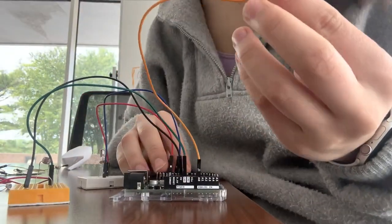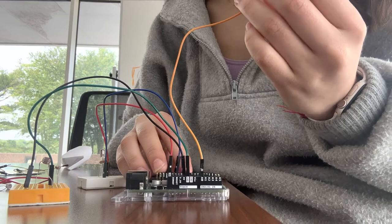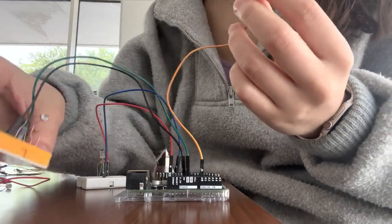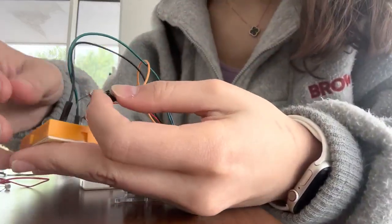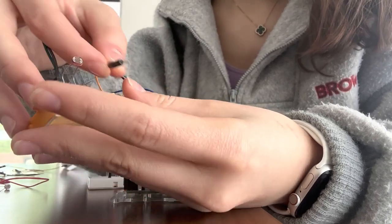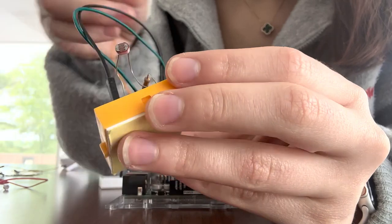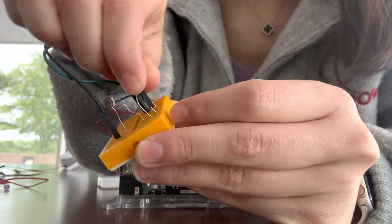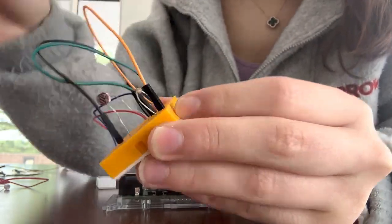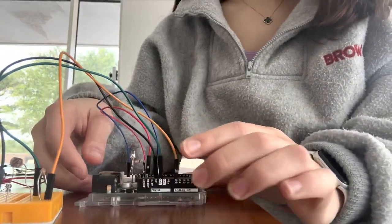And then you want to connect the other end to the same line as the photoresistor and the resistor, which is going to be on this line right here. There you go. Now you have your receiver.